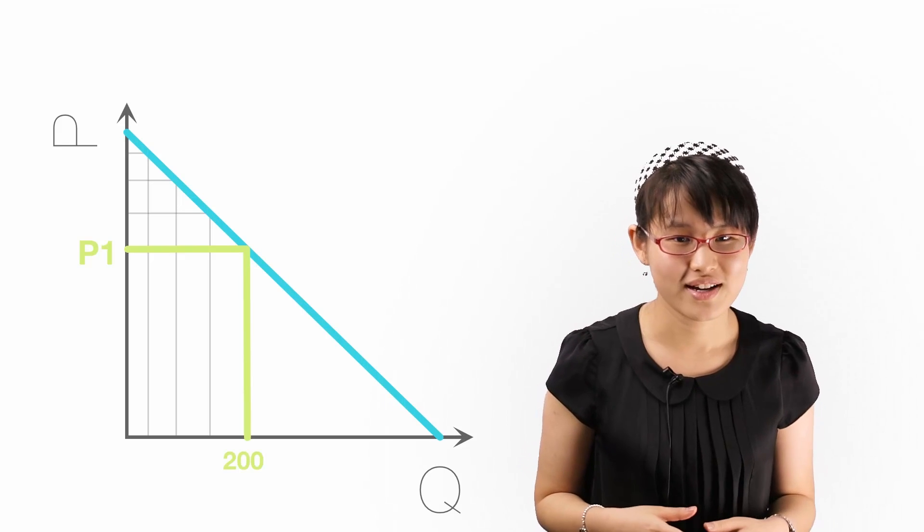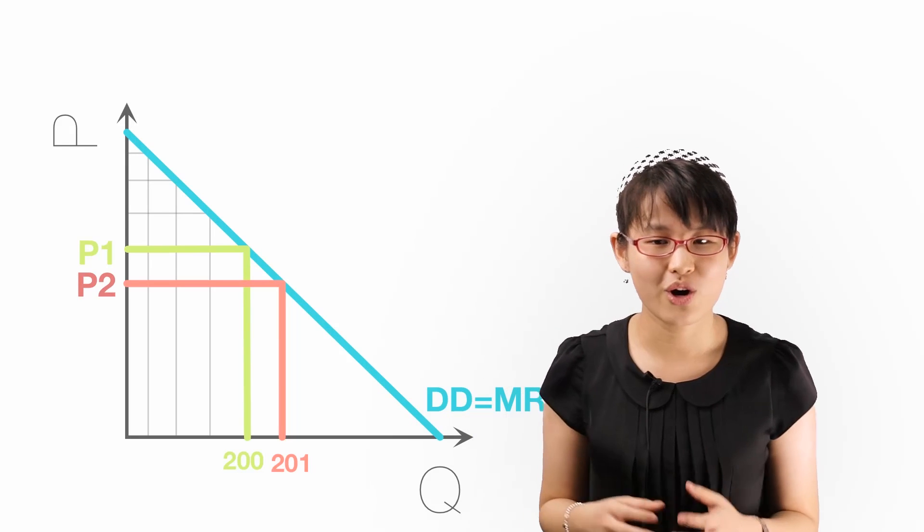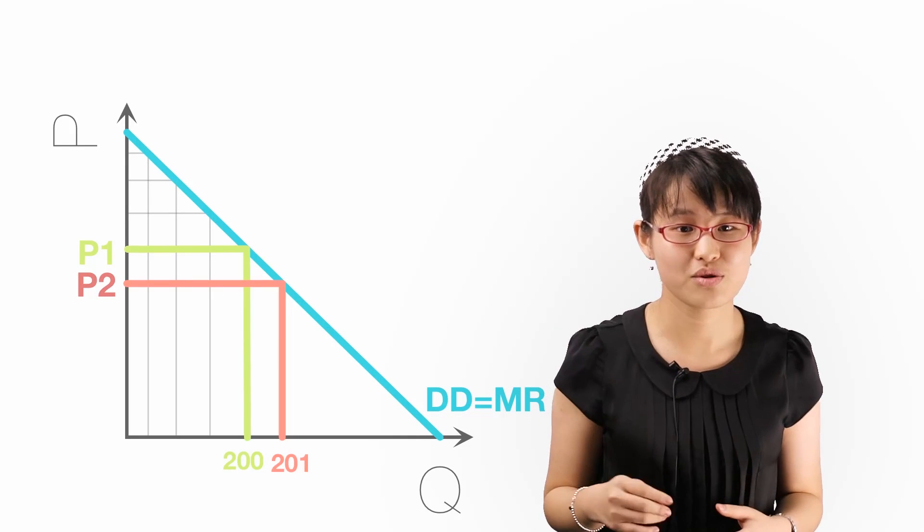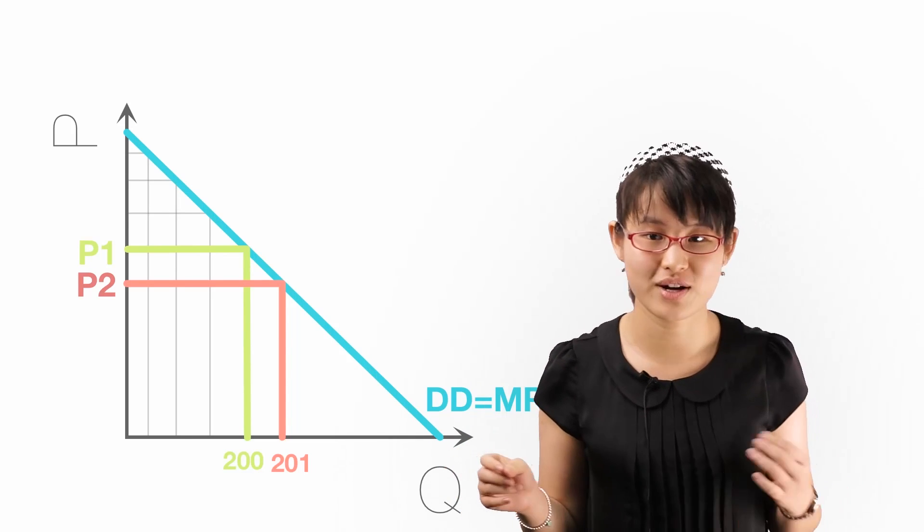The 201st buyer is willing to pay at most P2. This buyer is whom we call the marginal consumer. He is the person who will switch between buying and not buying when the firm switches between price 1 and price 2.